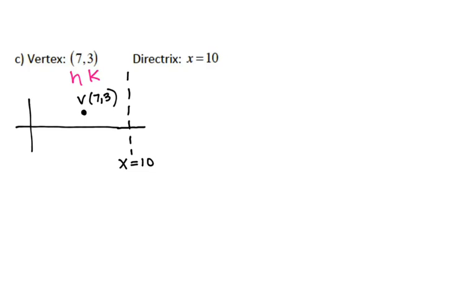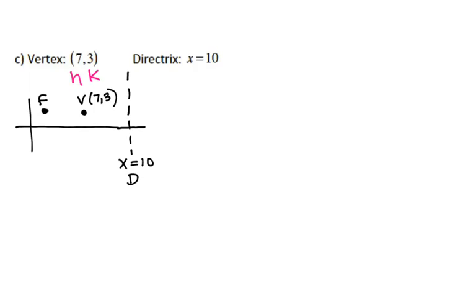The way parabolic graphs work is it always goes directrix, then vertex, then focus. So if my directrix is over here and my vertex is over here, that means my focus is somewhere on the other side. I don't actually care where that focus point is — I'm just using it to figure out my direction, because my parabola always opens towards the focus. So opening towards the focus means this parabola is opening to the left.